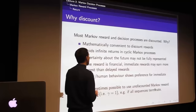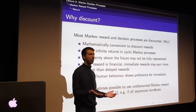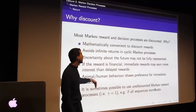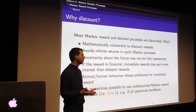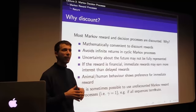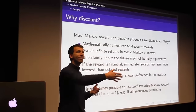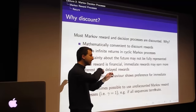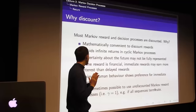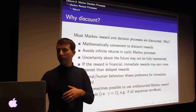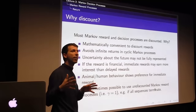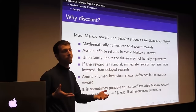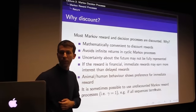If you don't agree with discounting, there are alternatives. There are undiscounted Markov reward processes — the simplest case being where all sequences terminate, as in our student MRP where all sequences eventually end in the sleep state, making all returns finite. There's also an average reward formulation in the extended notes, which handles infinite sequences without discounting.